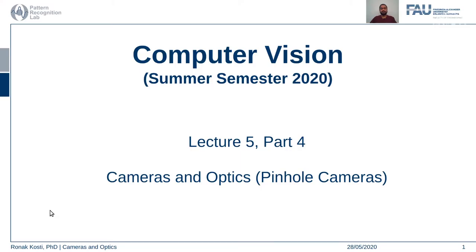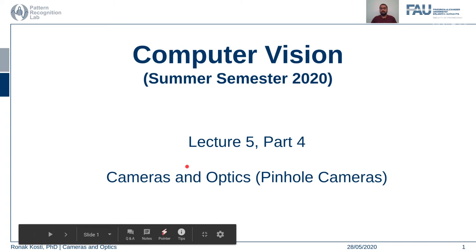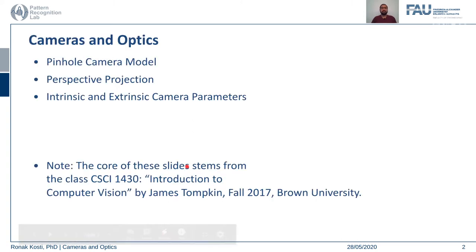Hello everyone, welcome back to the computer vision lecture series. This is lecture 5, part 4. In this lecture we are going to talk about cameras and optics, how images are formed, and the first version of our camera called the pinhole camera. We will cover the pinhole camera model, perspective projection, as well as intrinsic and extrinsic camera parameters. We have talked about vanishing points and vanishing lines before, and they form part of perspective projections.